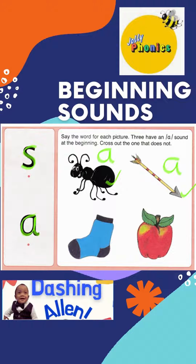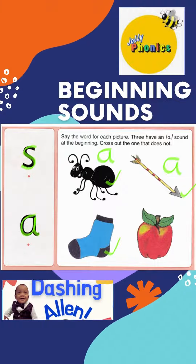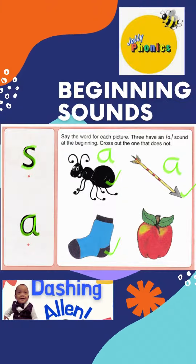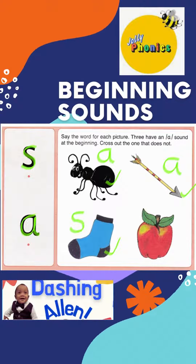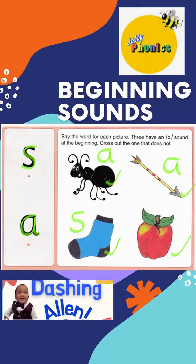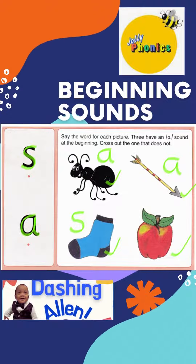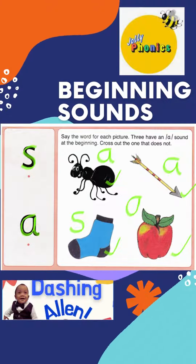The third picture? This one is? Very good! Sock starts with S. And the last picture is? Correct! An apple. Apple starts with A.